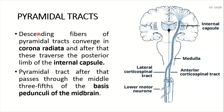The descending fibers of the pyramidal tracts converge in the corona radiata, and after that they traverse the posterior limb of the internal capsule. The pyramidal tract then passes through the middle three-fifths of the basis pedunculi of the midbrain.